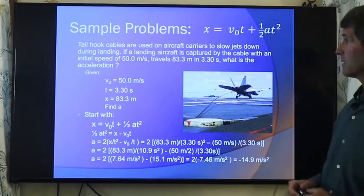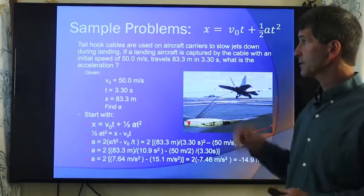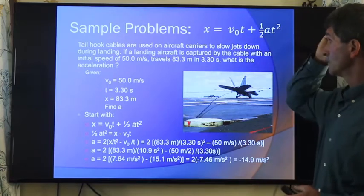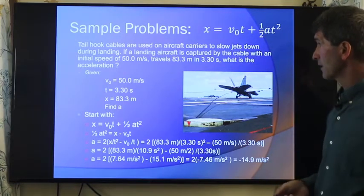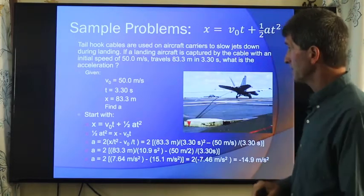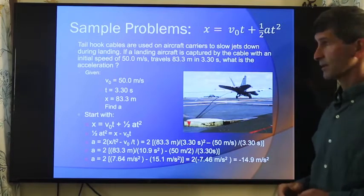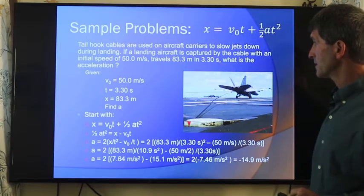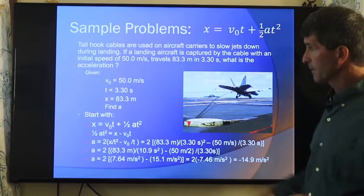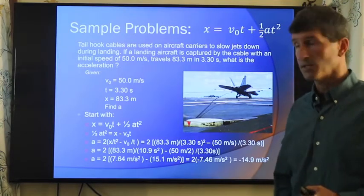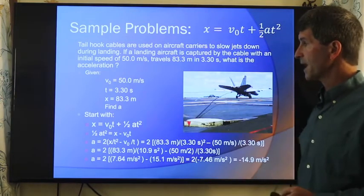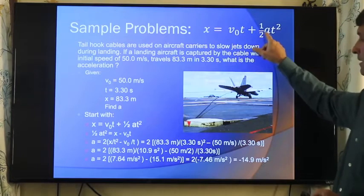Another example of this, here we're going to talk about the tail hooks used to secure planes as they land on an aircraft carrier. They slow down the jet during landing. If the landing aircraft is captured by the cable, it has an initial speed of 50 meters per second, travels 83.3 meters during this capture, and it takes 3.3 seconds to come to rest. What was the acceleration that the pilot feels? Again, initial velocity of 50 meters per second, that goes right here. Time of 3.3 seconds, goes right here. Distance, x, 83.3, goes here. We solve for the acceleration.